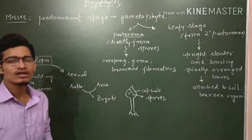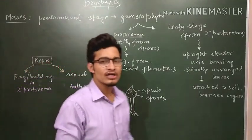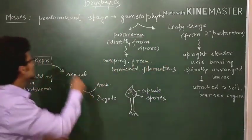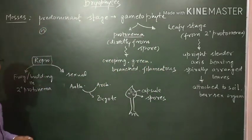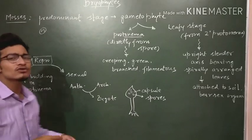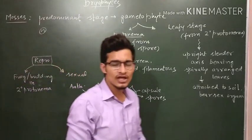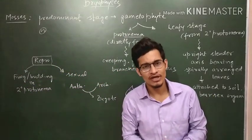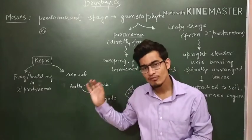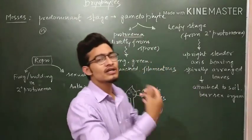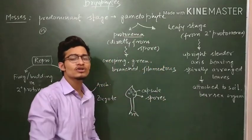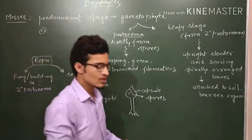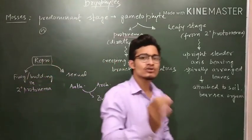We know very well that the main plant body is haploid in case of bryophytes, which is known as gametophyte. In the case of mosses, the gametophyte is also of two different types, or we can say there are two different stages.